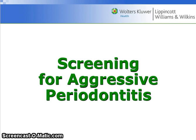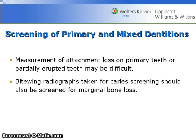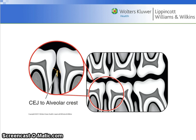Screening for aggressive periodontitis: a small but significant proportion of children and young adults are affected. Do not assume that young patients are healthy patients — early detection is very important given the severity and rapid progression of aggressive periodontitis. Measurements of attachment loss on primary teeth or partially erupted teeth may be difficult. Bite-wing radiographs taken for caries screening should also be screened for marginal bone loss. In the absence of local contributing factors such as restorations, a distance of 2 mm from the CEJ to the alveolar crest should cause the clinician to suspect periodontitis.